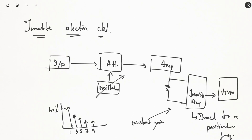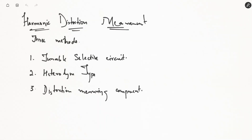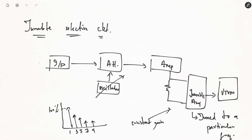In the last session we started with the measurement of harmonic distortion. We have three different circuitries that can be used: a tunable selective circuit, a heterodyne type, and a distortion measuring type. Within the tunable selective circuit, we pass the signal to an attenuator tuned using an oscillator to a particular frequency.